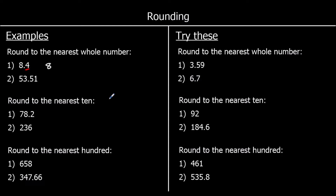The second one: 53.51. So it's in between 53 and 54 this time, and again we round to the nearest whole number. So we look at the next one down, which is the first decimal place. Is it 5 or above? Yes, it is. So we round up — it's closer to 54.